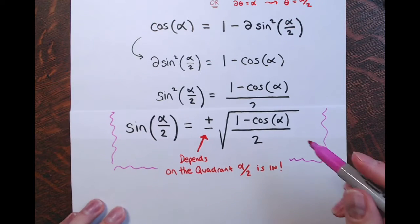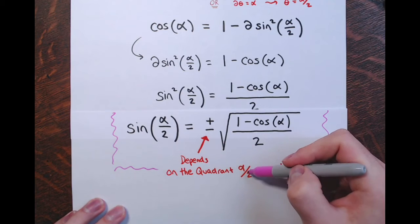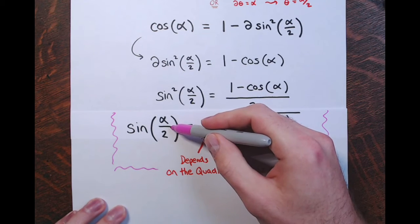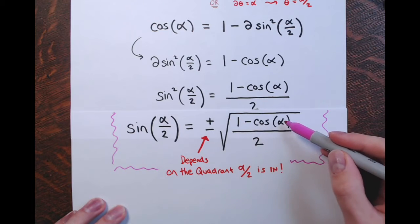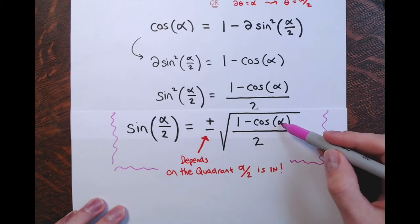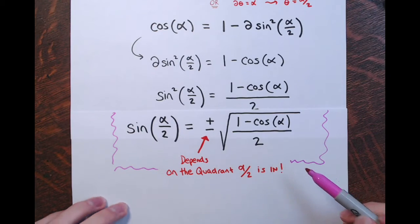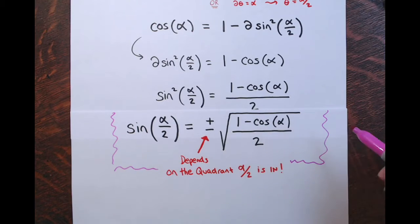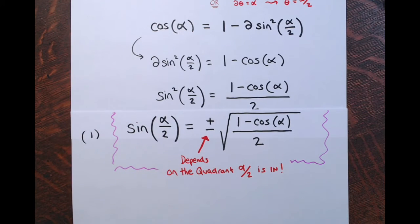This is our half angle formula for sine. The sine of half an angle — half of alpha — is either positive or negative depending on what quadrant this half alpha is in. It's the square root of one minus the cosine of alpha, which is double this angle, divided by two, and this is all underneath the square root. There's the sine — formula number one, the sine of half an angle.